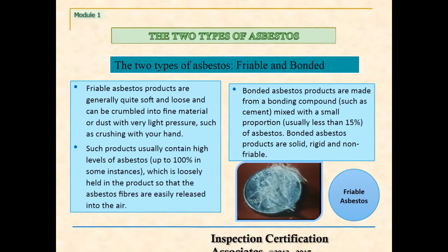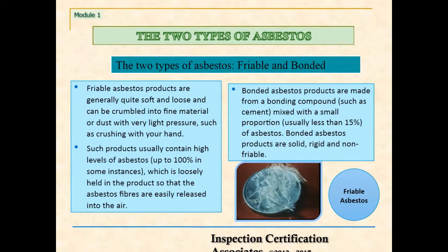There are two types of asbestos: friable and bonded. Friable asbestos products are generally quite soft and loose and can be crumbled into fine material or dust with very light pressure, such as crushing with your hand.